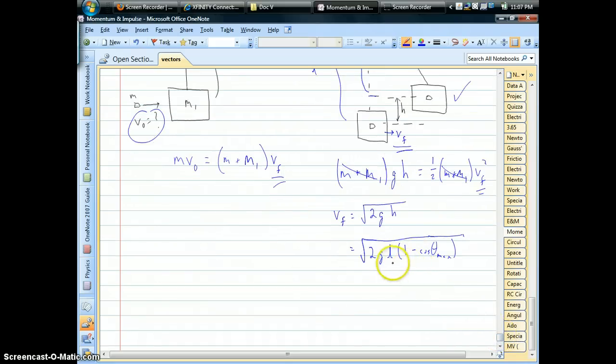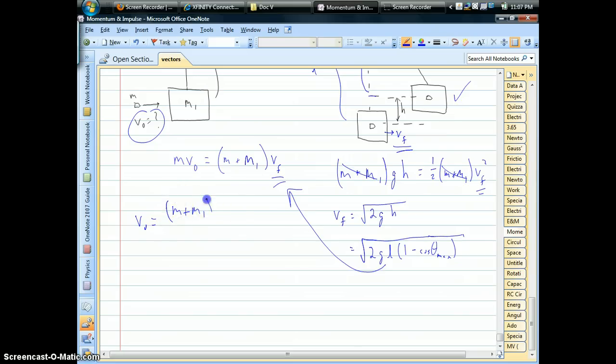So once we have that speed using energy, we can plug it into our momentum equation. And then we're done. The original speed of the bullet is going to be the total mass when we're stuck together. We're going to divide through by the mass of the bullet. And then we just have to plug in v_final.